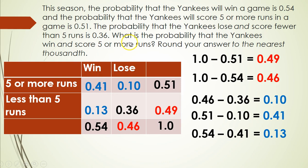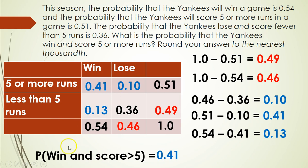This problem is a little different, so really pay attention when reading the question. It asks: what is the probability that the Yankees win and score five or more runs? Since it uses the word 'and,' we're looking for the value in one of the inner boxes — not our totals. That box is 0.41, and that is the answer. Whenever it's an 'and' question, the answer is directly one of the inner boxes.